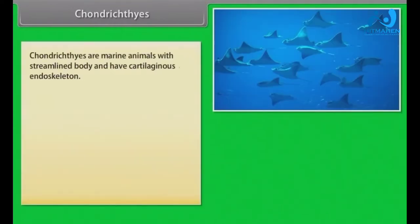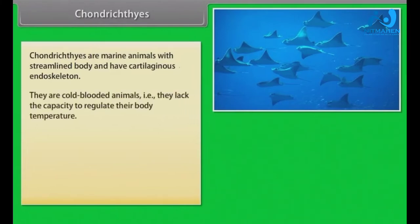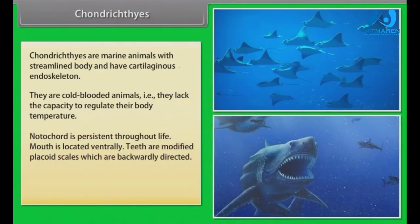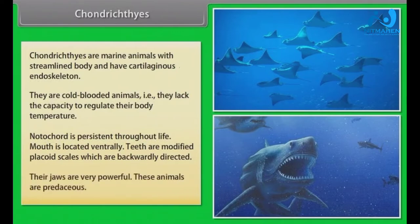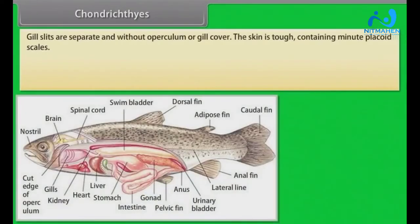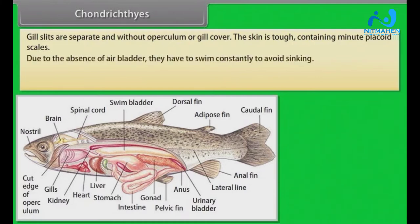Chondrichthyes are marine animals with streamlined body and have cartilaginous endoskeleton. They are cold-blooded animals, meaning they lack the capacity to regulate their body temperature. Notochord is persistent throughout life. Mouth is located ventrally. Teeth are modified placoid scales, which are backwardly directed. Their jaws are very powerful. These animals are predaceous. Gill slits are separate and without operculum or gill cover. Their skin is tough, containing minute placoid scales.